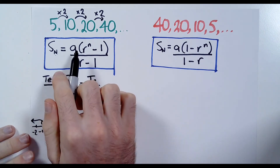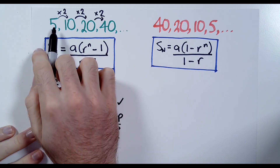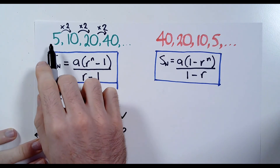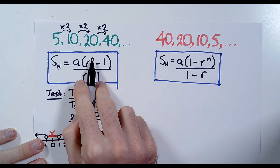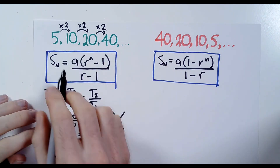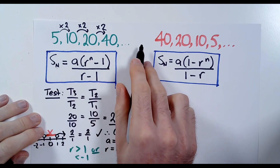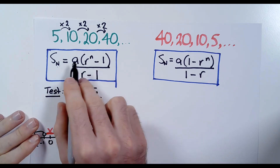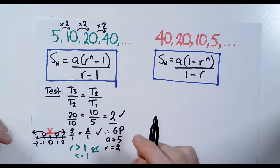Let's follow the formula. A represents the first term in the progression, which is 5. R represents the common ratio, which is the number being multiplied by each term to get to the next one — we know that was 2. N represents the number of terms in the sequence that you want to add together. Here we have 4 terms shown, but it keeps going, so we could find the sum of the first 50 or first 100 terms using this formula.